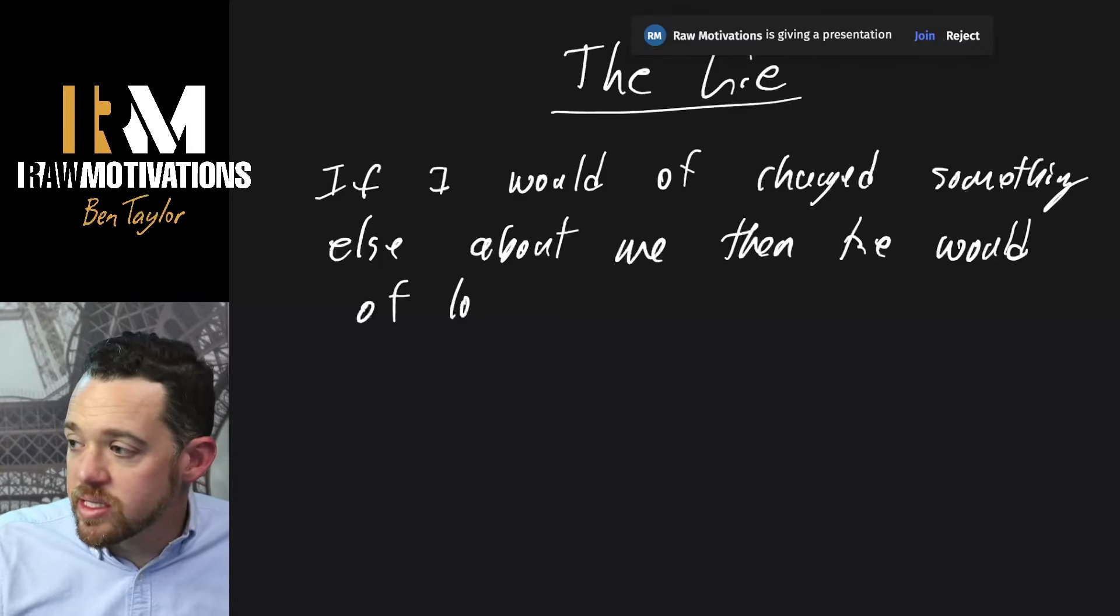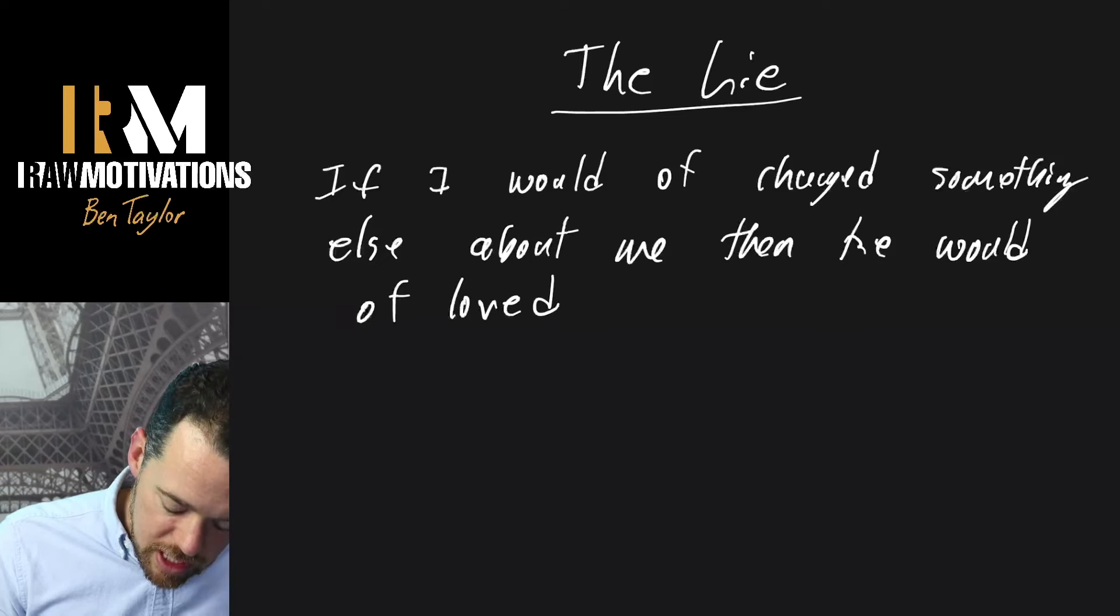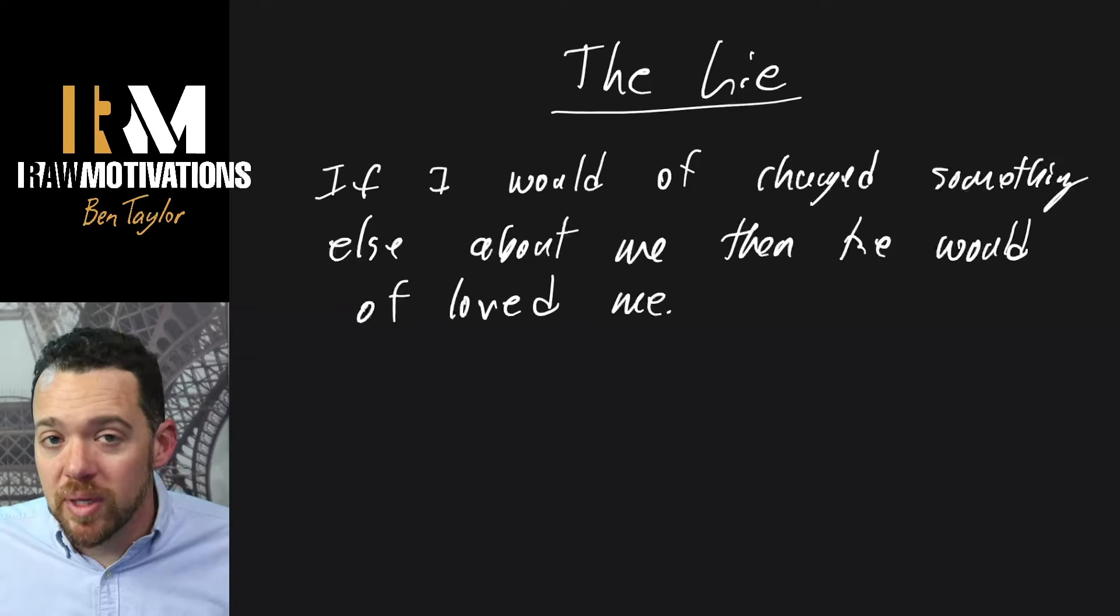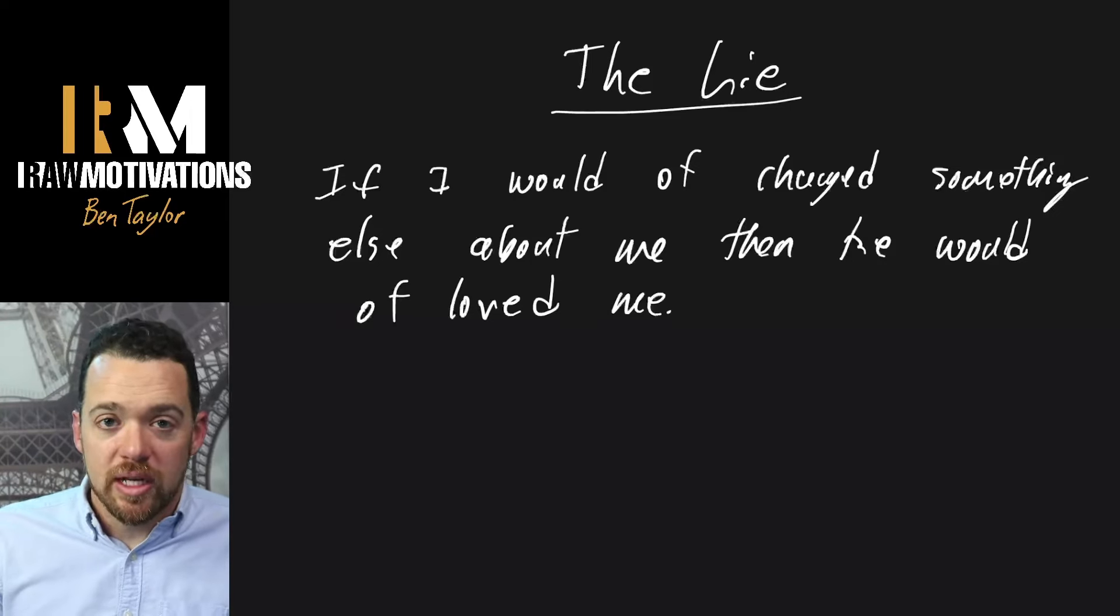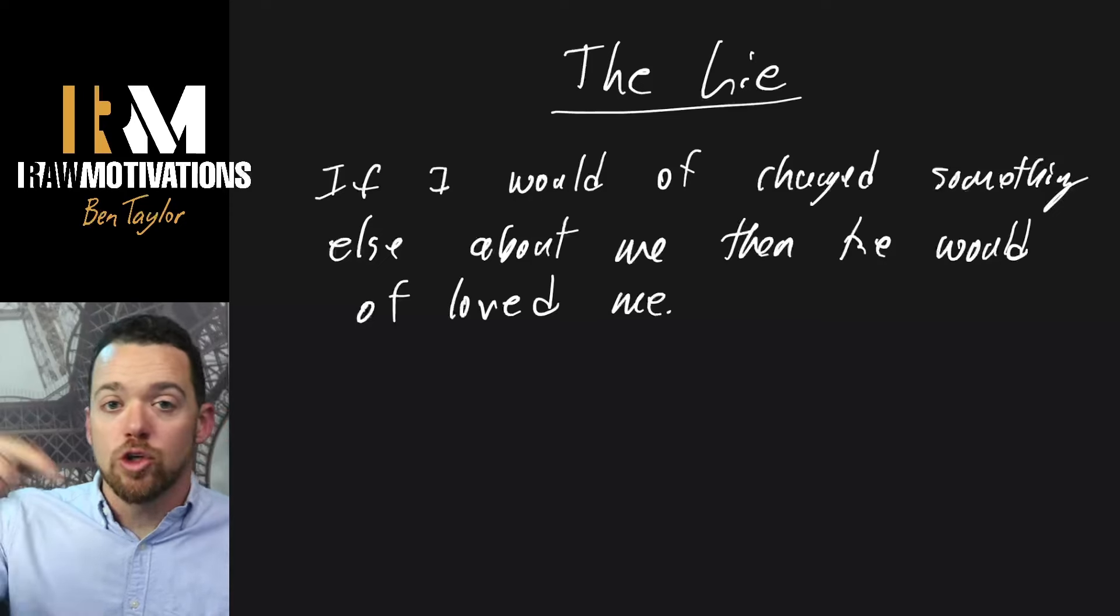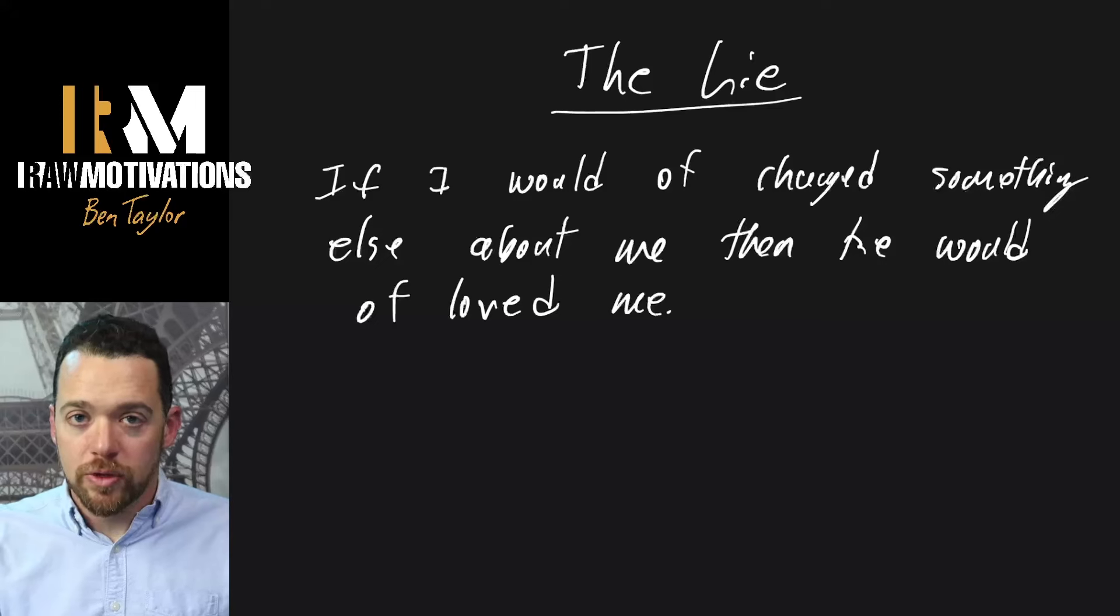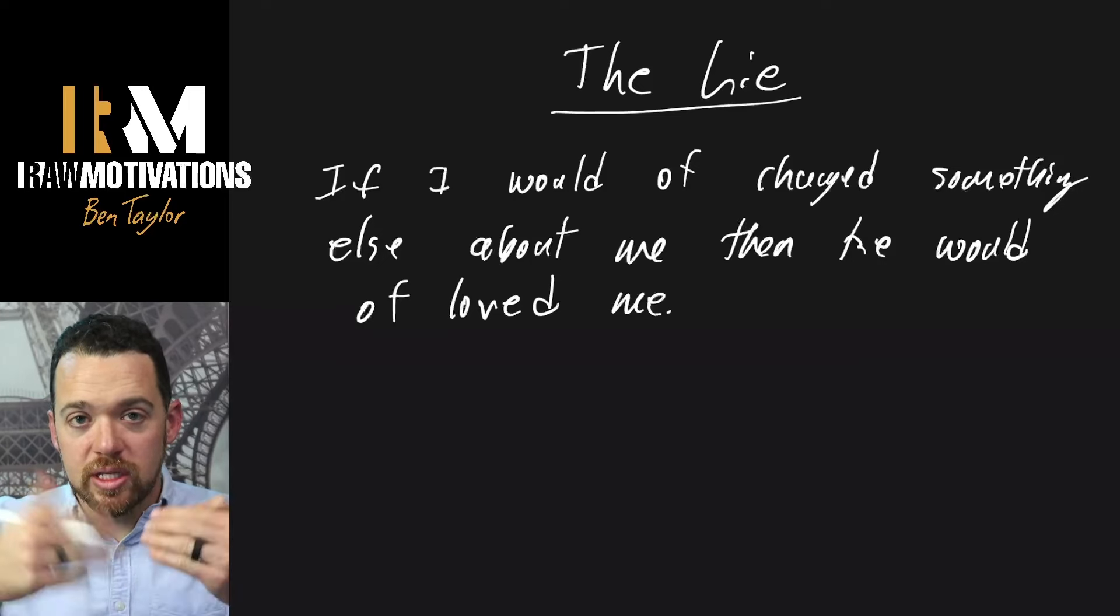You're going to see this a lot of times of thinking like, if I would have done this, if I would have done this, then he would have loved me. Then he would have cared about me. There's always going to be a million different stories from different people, but this could be one of the lies. If I would have changed something, then he would have loved me. Now, the thing is you could have continued to change over and over and over again, and he never would have got to that stage. Why? Because he didn't care about you to start off with. He was just trying to do this to lead you on.